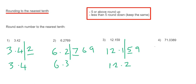So our final question, we have 71.0389. Again, we've got to round it off to the nearest tenth. So we put a line in after the tenths column.